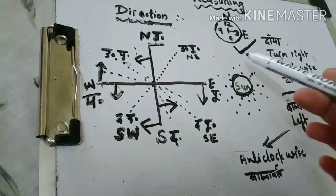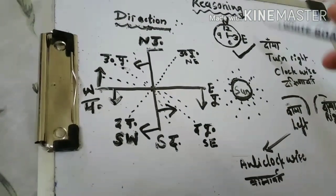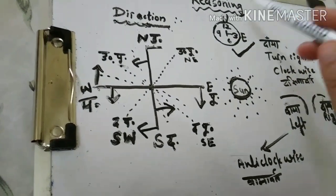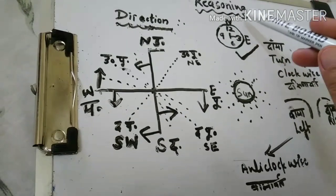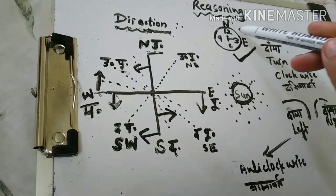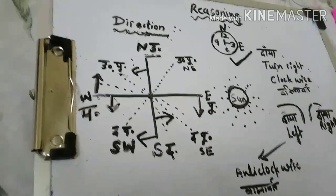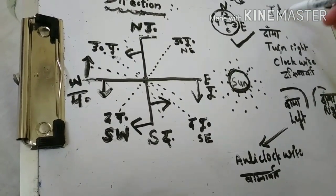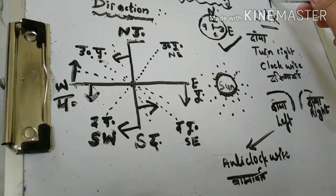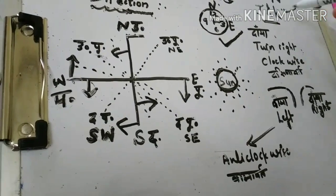Another way to remember is with the help of a watch. On a watch, the 12 is always at the top - we always place north there. One more trick: Jammu and Kashmir is always in our north. So there are three or four ways to remember where north is, and just to the right of north is east.